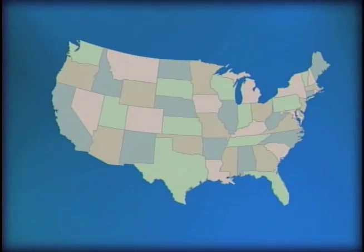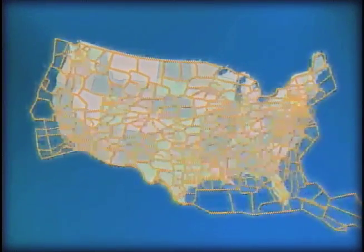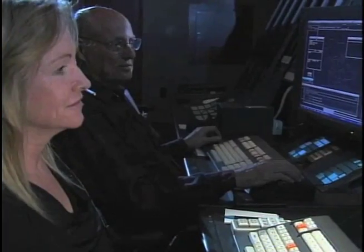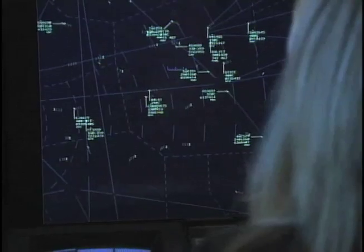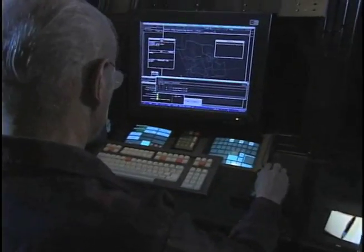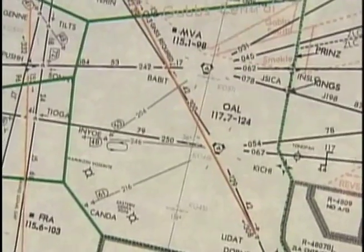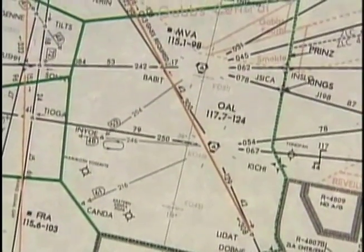The U.S. mainland is divided into 48 states. The airspace above the U.S. is divided into sectors. Each sector has two air traffic controllers, who are responsible for the safe and efficient flight of all planes in that sector.